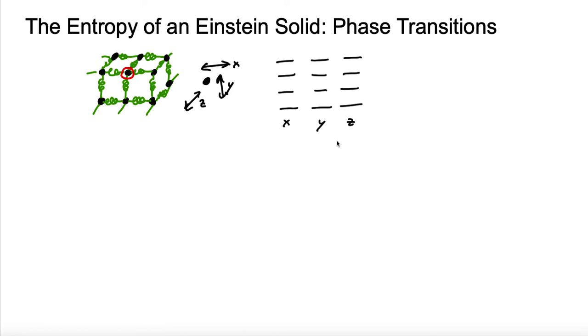Let's look at the effect of phase transitions on entropy using this same model. Before we do this, I need to just tell you one result from quantum mechanics. And that is that the distance in spacing between these energy ladders is a function of how tightly bound they are. So if you have a very stiff, tightly bound solid, like say diamond, where the bonds are very stiff, versus a looser solid, where the bonds are not as stiff, like graphite, for instance.